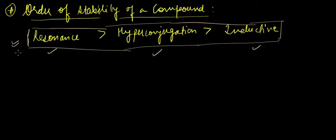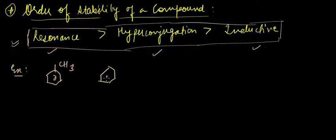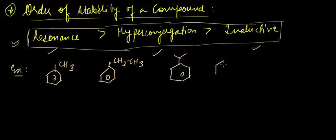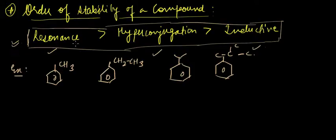Let us take some examples where we compare the stability of the following compounds. First, we check for resonance. Every compound in this example has the same number of resonance structures available, so all qualify equally for resonance — all have the same number of resonating structures. Next, we check for hyperconjugation.